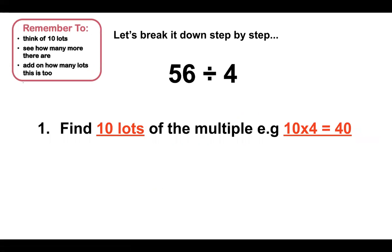Let's have a look at another one: 56 divided by 4. Our first step is to find 10 lots of the multiple that we are dividing by. Here I'm dividing by 4 again, so I need to find 10 lots of 4. So I would do 10 times 4, which is 40.